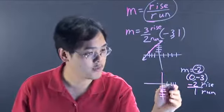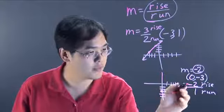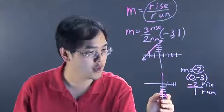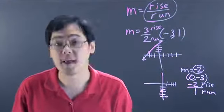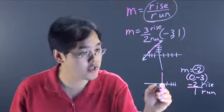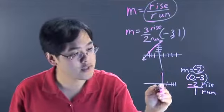So from this point, we're going to follow the directions. We're going to go down two because of the rise of negative two and we're going to go over one. And then you've got your graph because you can just connect the dots like so.